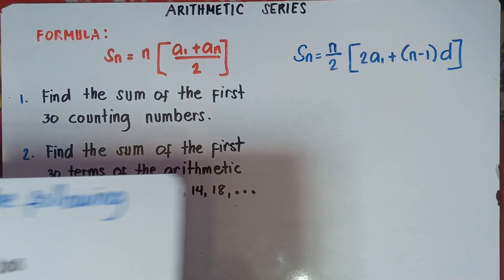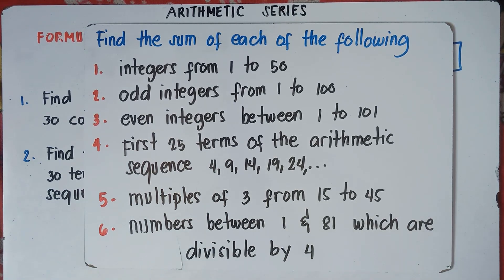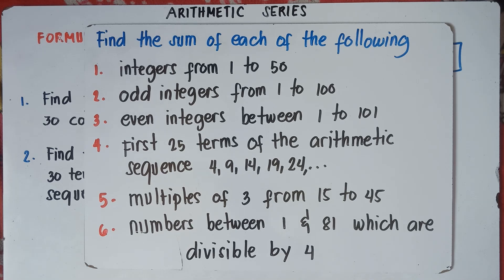Before we answer number 1, our next video, class, it's quite complicated — we have problem solving. Find the sum of each of the following: number 1, integers from 1 to 50; number 2, add integers from 1 to 100; number 3, even integers between 1 to 101; number 4, first 25 terms of the arithmetic sequence 4, 9, 14, 19, 24; number 5, multiples of 3 from 15 to 45; and number 6, numbers between 1 and 81 which are divisible by 4. This is quite complicated but do not be worried — I will put the link in the description below on how to answer these questions.